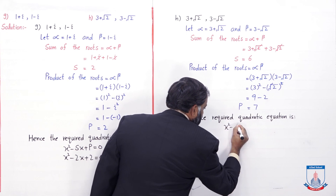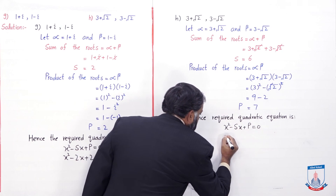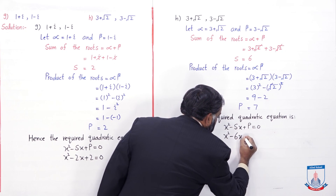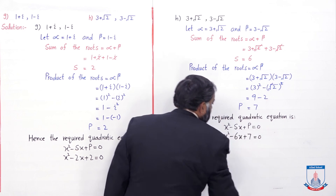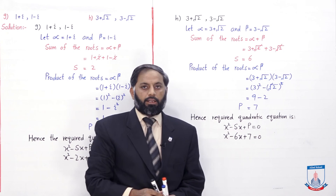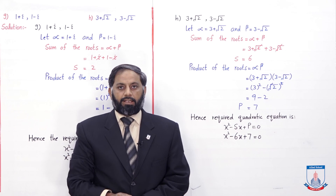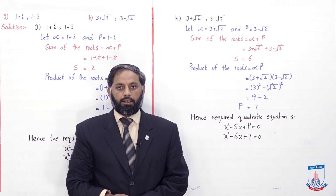Hence the required quadratic equation is x² - Sx + P = 0. Putting S = 6 and P = 7: x² - 6x + 7 = 0. Students, today in this lecture we solved Exercise 2.5 Question 1. The parts not solved on the board, you solve as homework. In the next lecture we will complete this exercise. Take great care of yourself. Allah Hafiz.